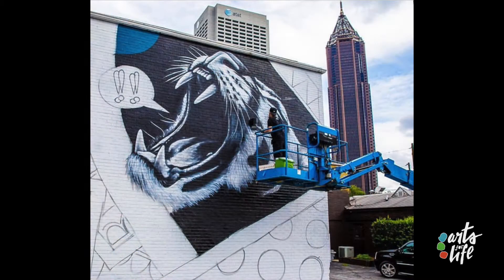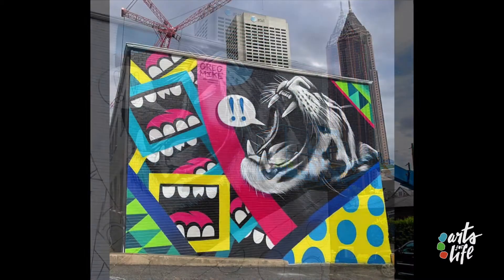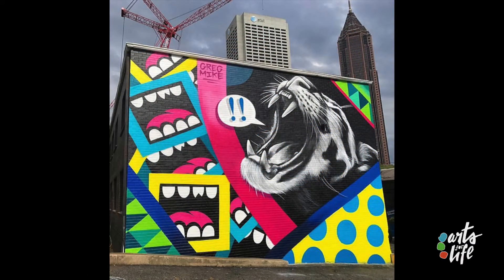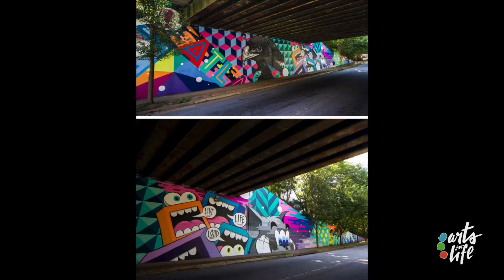He's inspired by classic mid-century cartoons, surrealist pop art, and skater culture. In addition to having paintings and galleries, Greg Mike's bright murals can be seen across the United States, around the world, in downtown Atlanta.